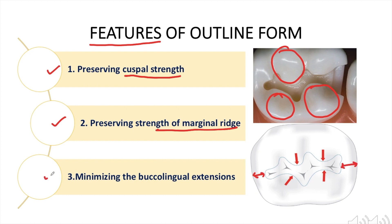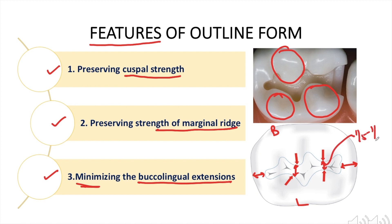Another thing we need to keep in mind is to minimize the buccolingual extension. This is the buccal side and this is the lingual side — we shouldn't overly cut the tooth structure. The narrowest part of the cavity is the isthmus. The width of the isthmus should be one-fifth to one-fourth of the intercuspal distance for amalgam, and one-third in case of cast metal restorations. This will preserve the tooth strength.